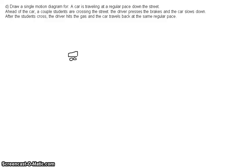Draw a single motion diagram for a car traveling at a regular pace down the street. Ahead of the car a couple students are crossing the street and the driver presses on the brake and the car slows down. After the students cross, the driver hits the gas and the car travels back at the same regular pace.